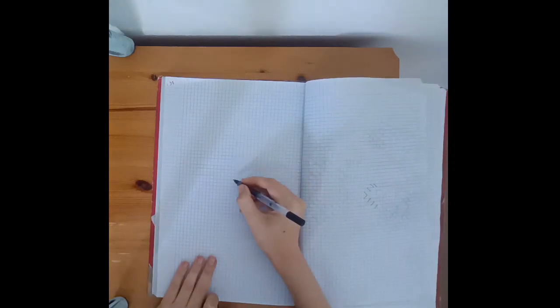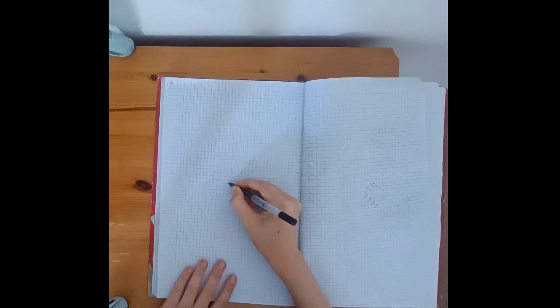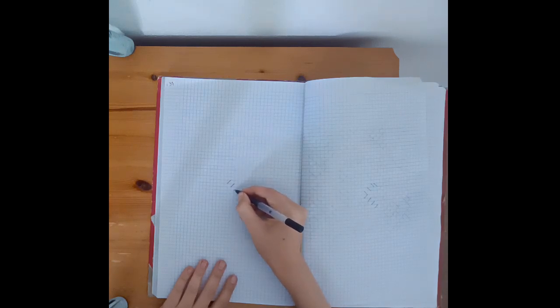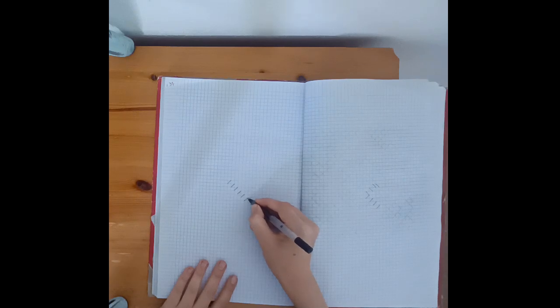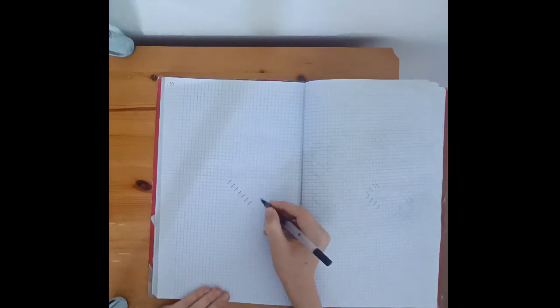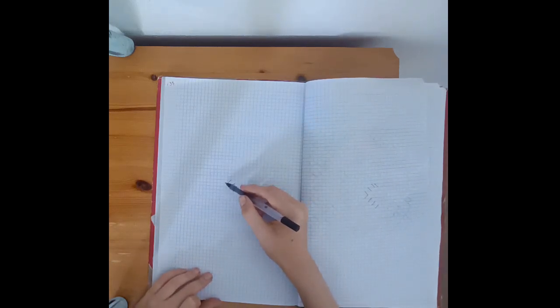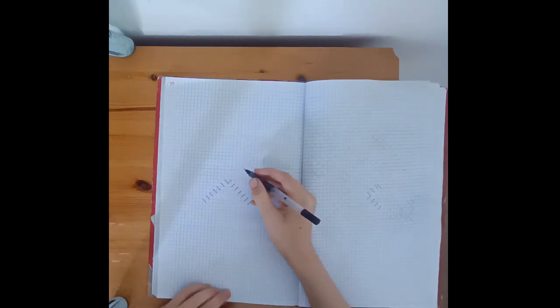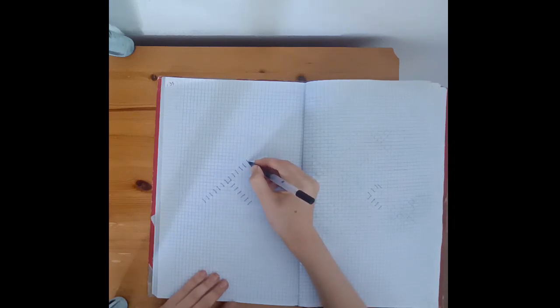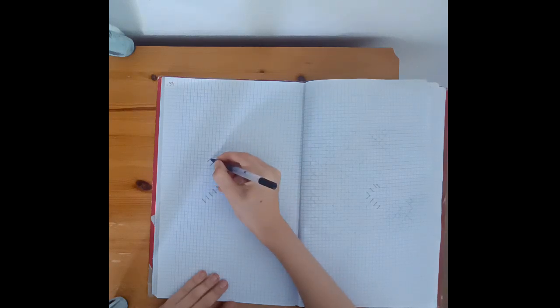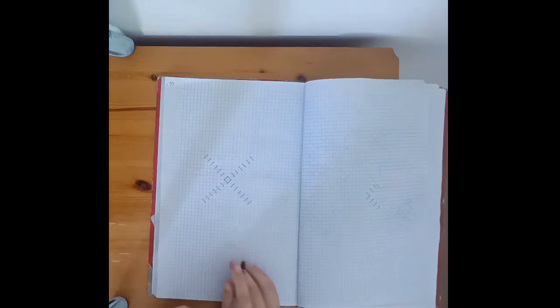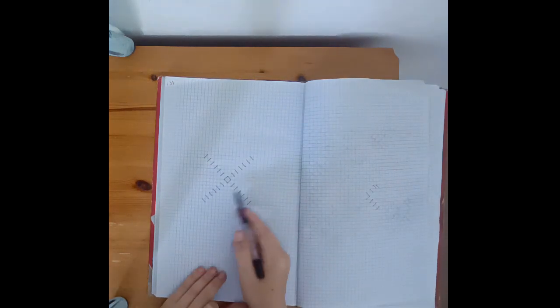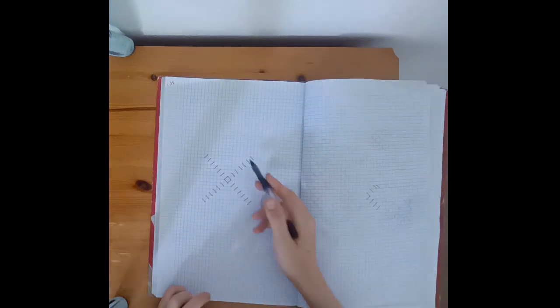So first what we're going to do is start out from around the center and draw 7 horizontal diagonal lines. So 1, 2, 3, 4, 5, 6, 7, and then you're going to do that in the other directions too.